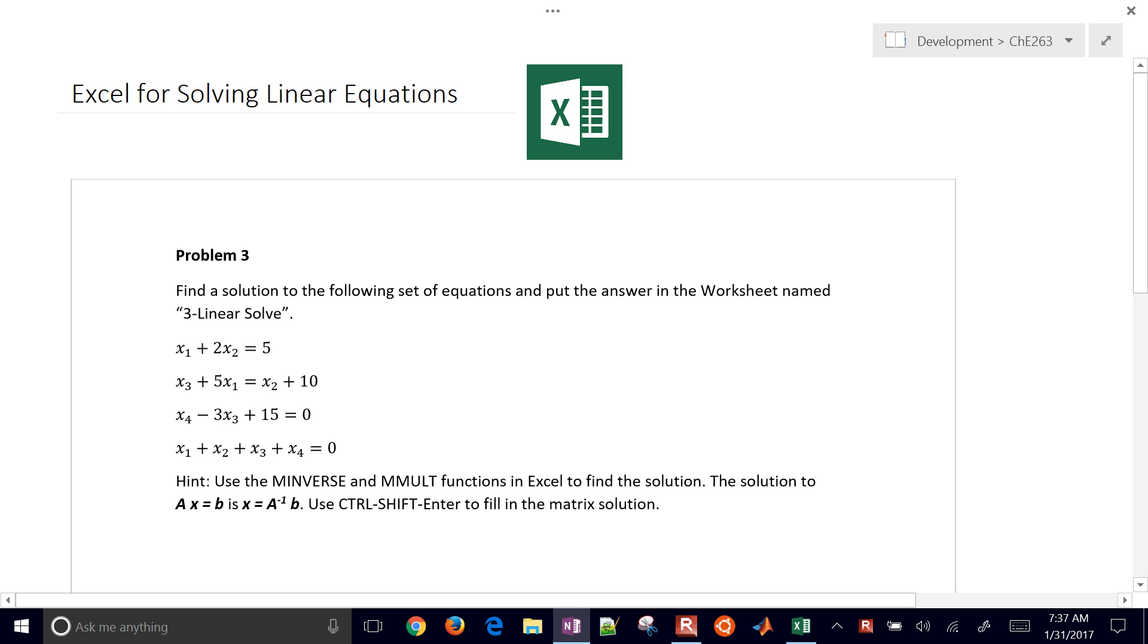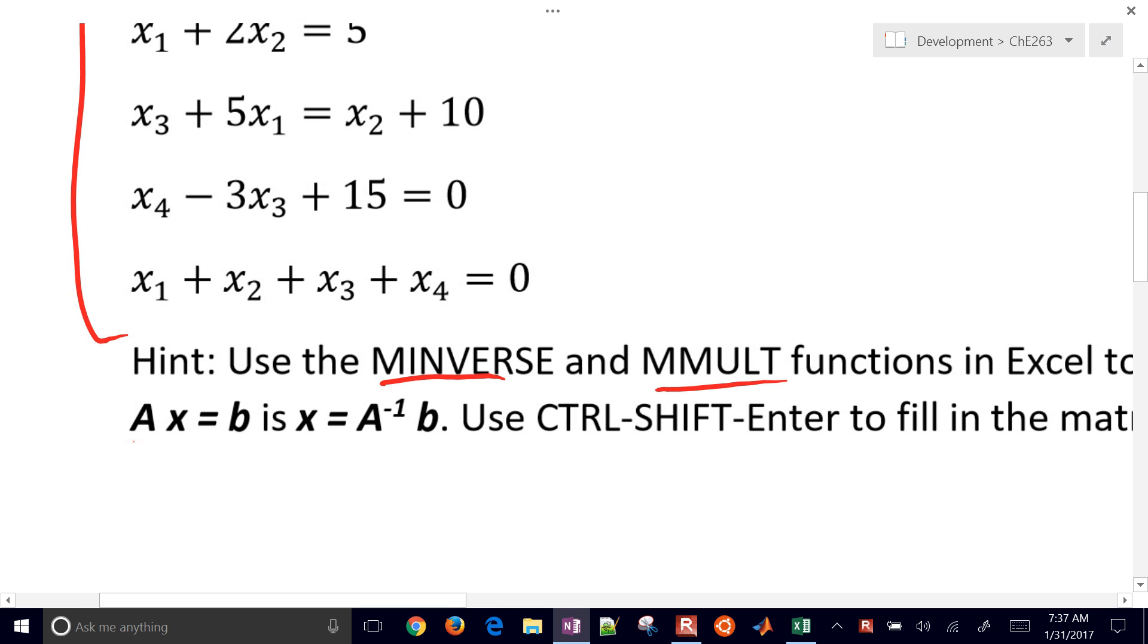We're going to set up and solve a set of linear equations with Excel. There's going to be these equations right here, four equations and four unknowns. With this hint right here, we're going to use MINVERSE and MMULT to do the matrix inverse and matrix multiplication. We're essentially going to be solving a set of equations like this, AX equals B.